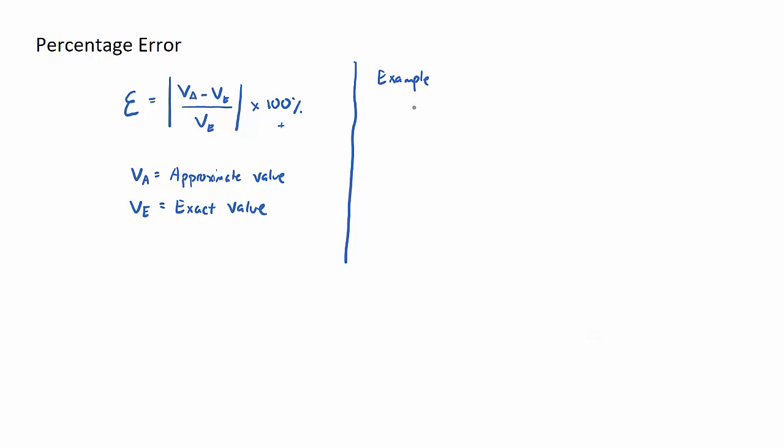Let's say that I estimate there to be—and this is my VA because it's my estimate—let's say I estimate there to be 950 people in a crowd. And then we count it, we count the people, so our exact value is actually 1000 people.